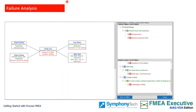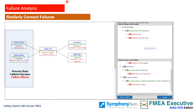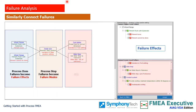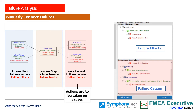A very important concept to remember: in process FMEA, the process failure associated with the process step becomes the failure mode. Failures associated with the process item become the failure effects, and failures associated with the work elements become failure causes. You can see in the example that a single failure mode will lead to many effects and have multiple causes. Actions can be taken on causes. Click the back to FMEA button to go back to the FMEA tree.